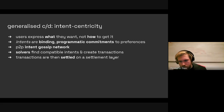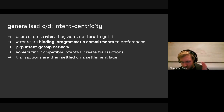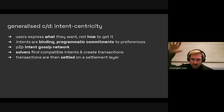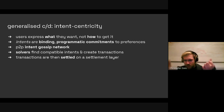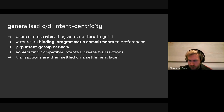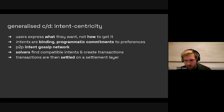Intents, by contrast, are not complete — they are not valid alone. They're broadcast around this network and eventually discovered by solvers, whose job it is to find compatible intents and use them to create transactions. For example, if a solver finds an intent that says A for B and another that says B for A, they can combine those because they balance, and that becomes a valid transaction. That transaction then goes to the separate transaction mempool and is settled in the conventional sense.